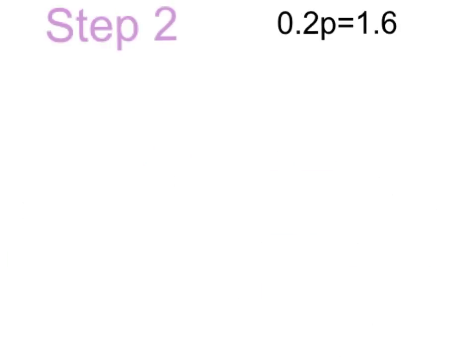Now we're on to step 2 of the equation. What you want to do in this step is isolate the variable. You're going to make 2 tenths p into 1p. However you make a number into 1, you just divide the number by itself, and that's going to look like this.